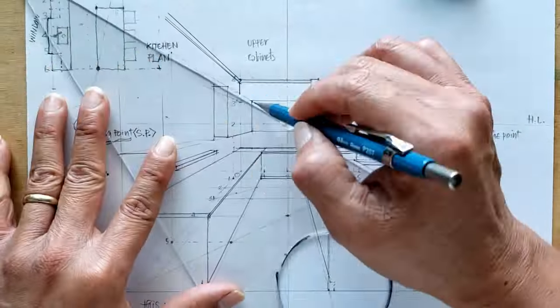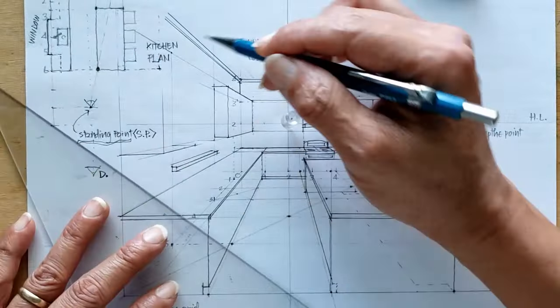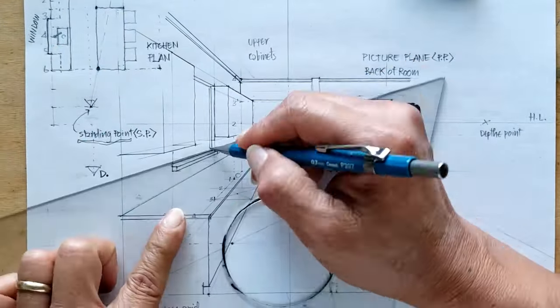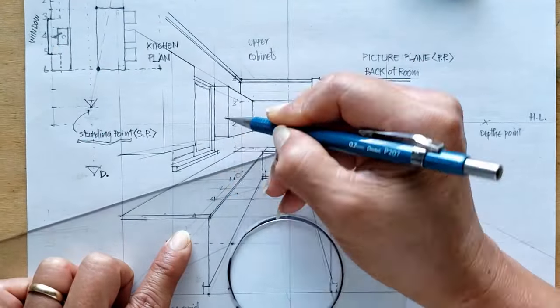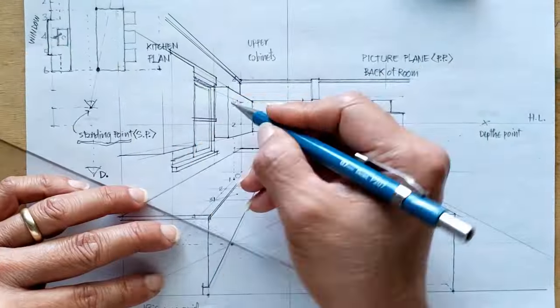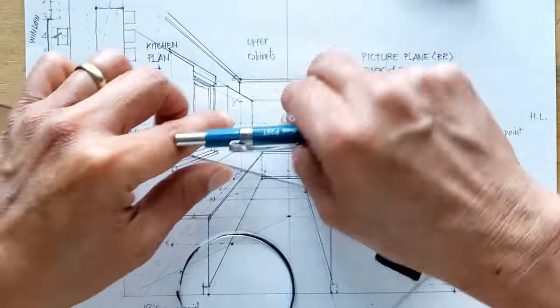Trying to complete the cabinet and then get the window in it. You pretty much get the structure of the base one-point perspective.